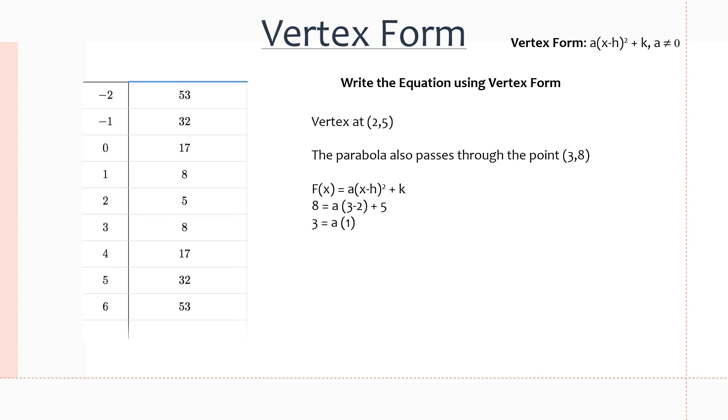So if we just simplify this, we get 8 minus 5, which is 3, and then a multiplied by 1, because 3 minus 2 equals 1. And that just means that a equals 3. And now that we have our a value, we can just substitute that right back into the equation to get this equation right here. And if you're ever unsure that your equation might be wrong, just substitute a value. So if you substitute in 1, you should get f(x) equals 8, and that's how you know you did it correctly.